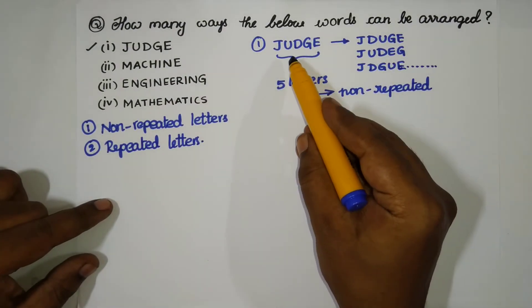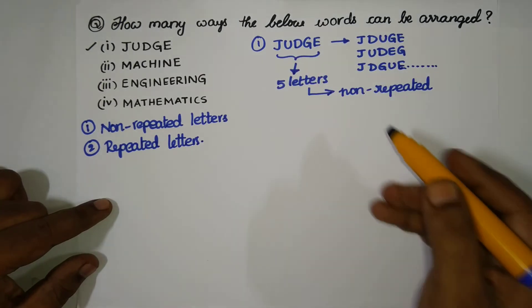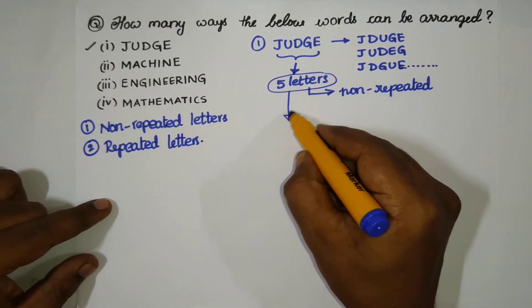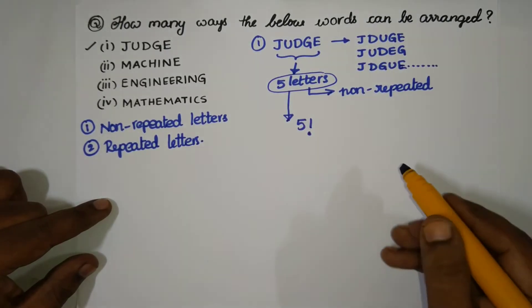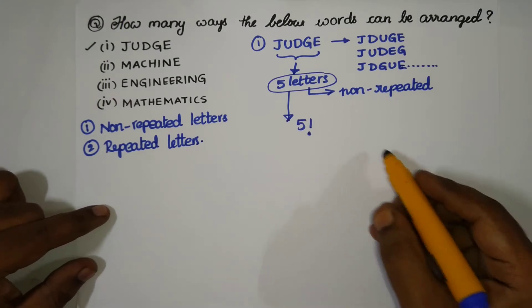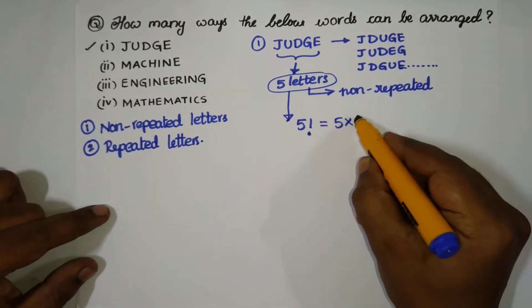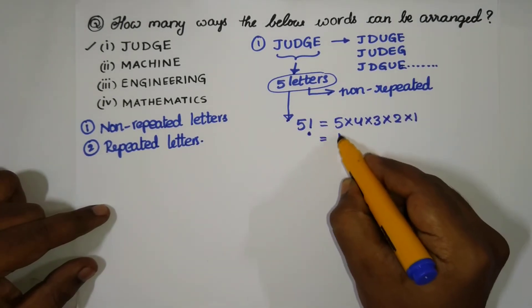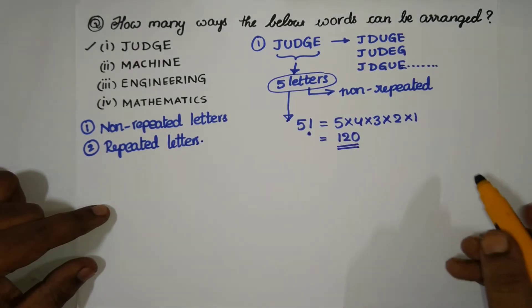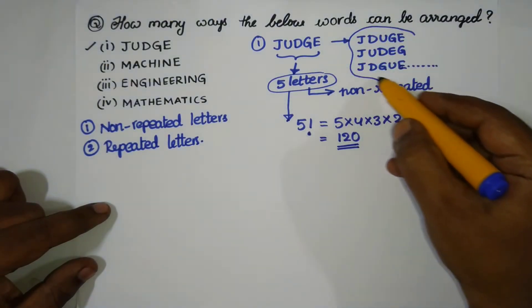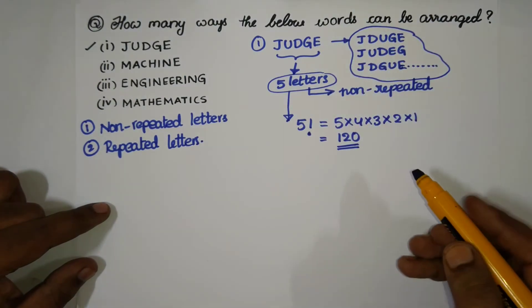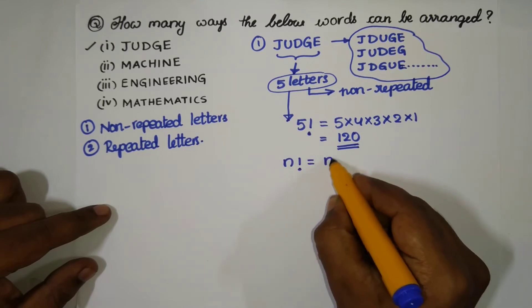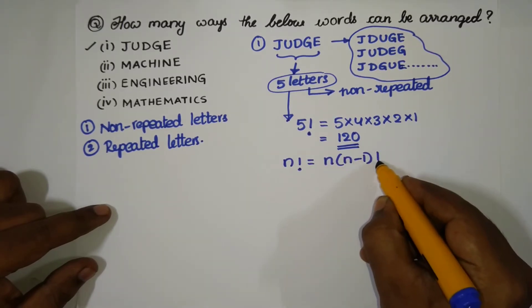For the word JUDGE, no letter is repeating, so with five total letters we can arrange the word in 5 factorial ways. Five factorial means 5 × 4 × 3 × 2 × 1 = 120. So we can arrange JUDGE in 120 ways. Generally, n factorial equals n multiplied by (n−1) factorial.